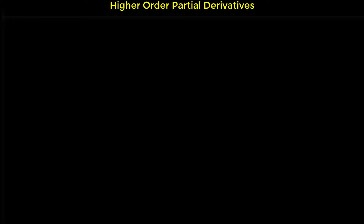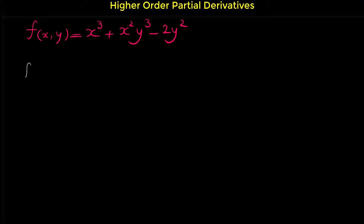In this video I'm going to show you how we can find partial derivatives of multi-variable functions. Let's start with this function: f of x and y equals x cubed plus x squared y cubed minus 2y squared.